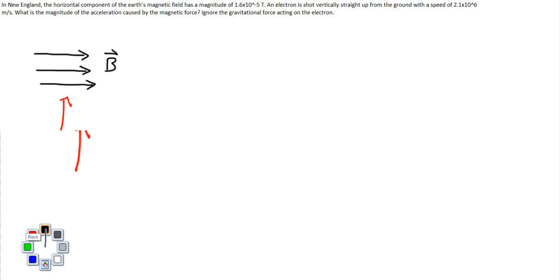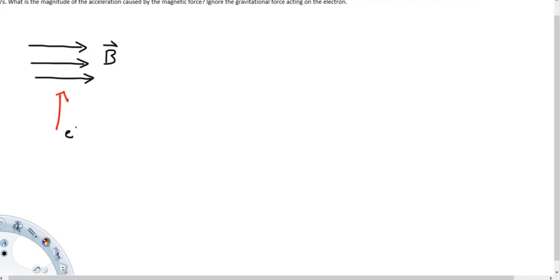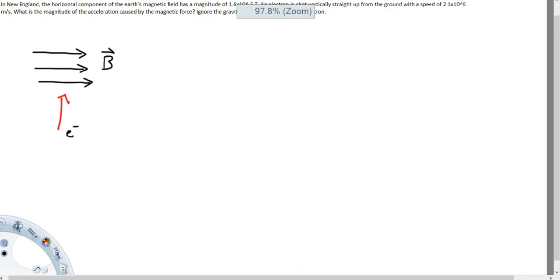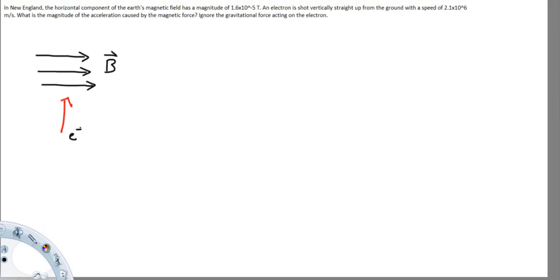And then there will be an electron that is traveling with the velocity of 2.1 times 10 to the sixth meters per second, perpendicular to the magnetic field.